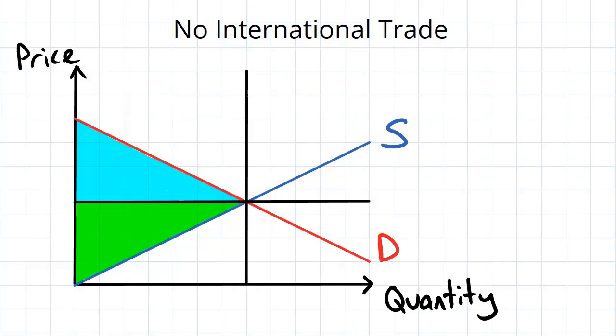We get a market equilibrium looking something like this and we have an efficient amount of surplus. Now imagine however that international trade is possible and so there is a global market price represented here. This is the price to purchase goods if you import them.